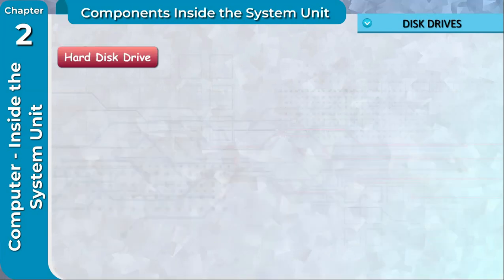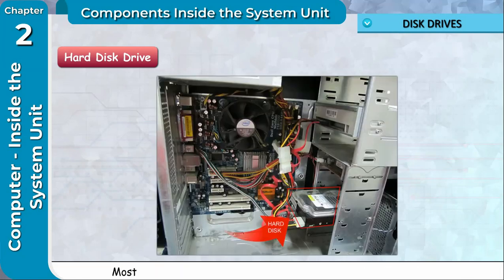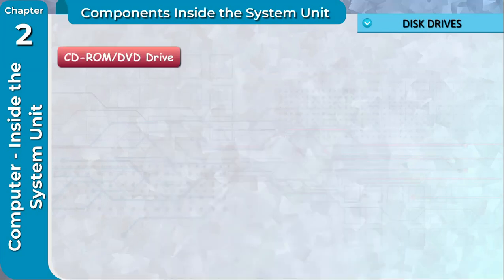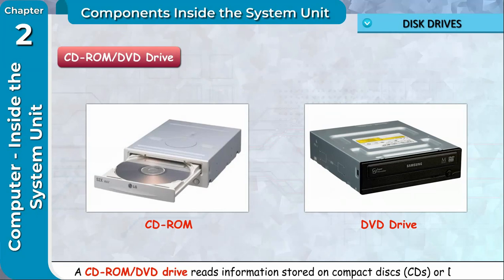Hard disk drive: The hard disk drive is used to store data and information for future use. Most computers have one hard disk located inside the system unit. CD-ROM or DVD drive: A CD-ROM or DVD drive reads information stored on compact discs, CDs or DVDs.